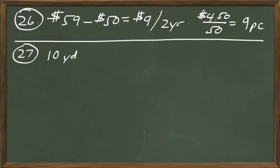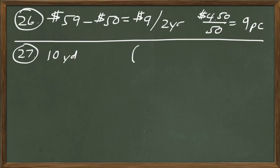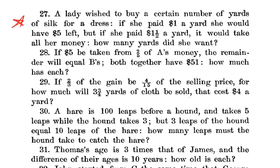That's one we could do in our heads fairly quickly if we know what to compute. If you went further to find how much money she had to start with: 10 yards at $1 a yard plus $5 left means she had $15. Checking: 10 times $1.50 is $15, and all the money is gone — that checks out. She must have had $15, but the answer to problem 27 is simply 10 yards.